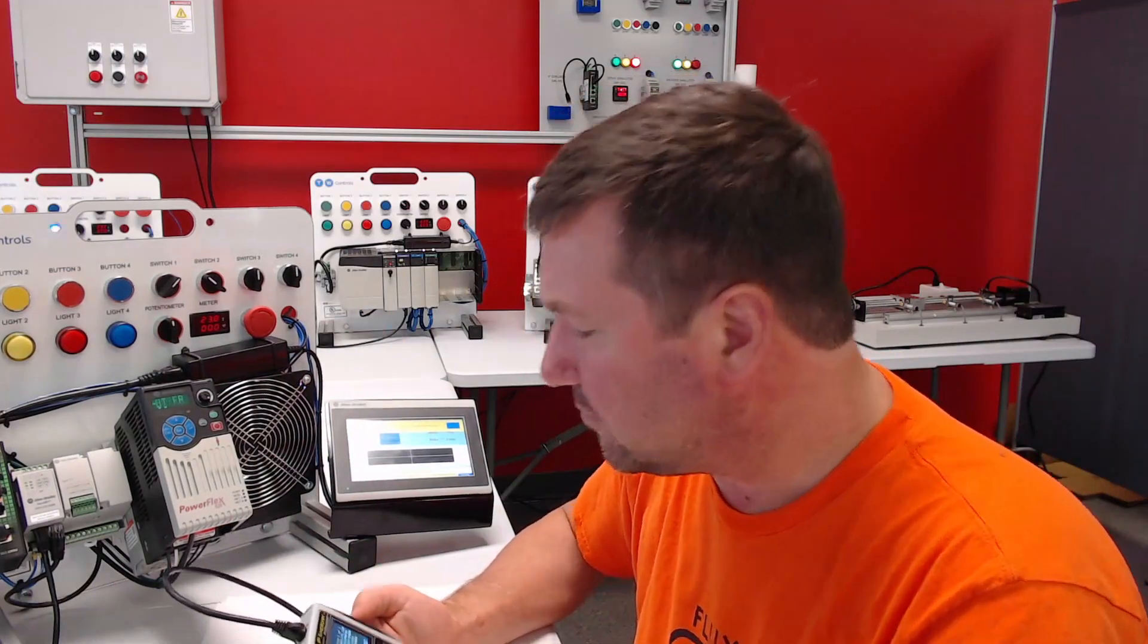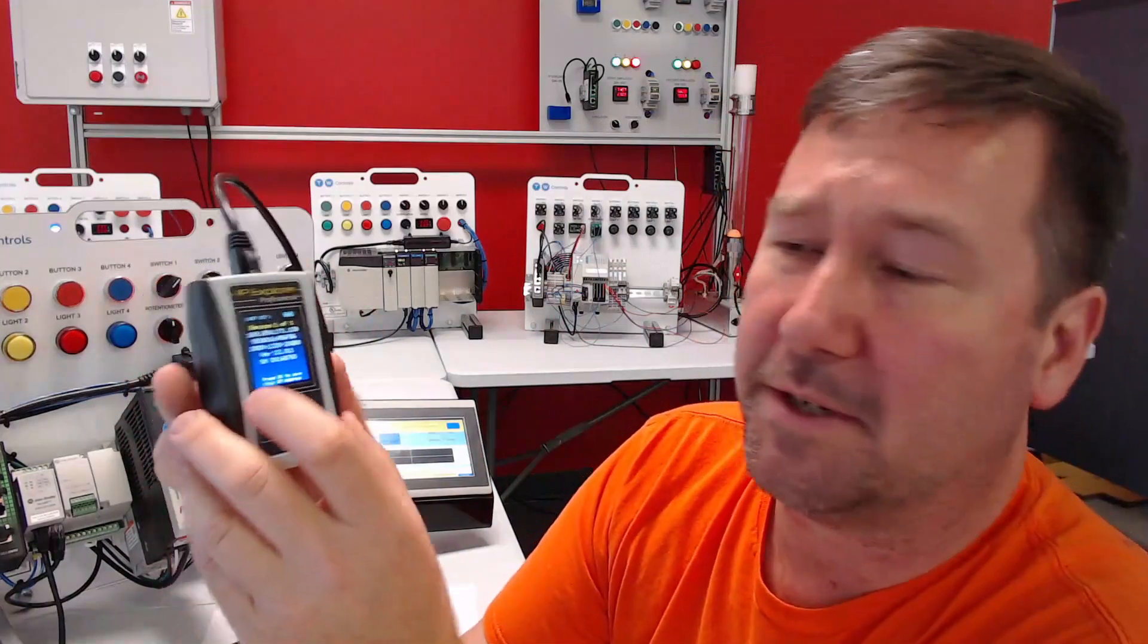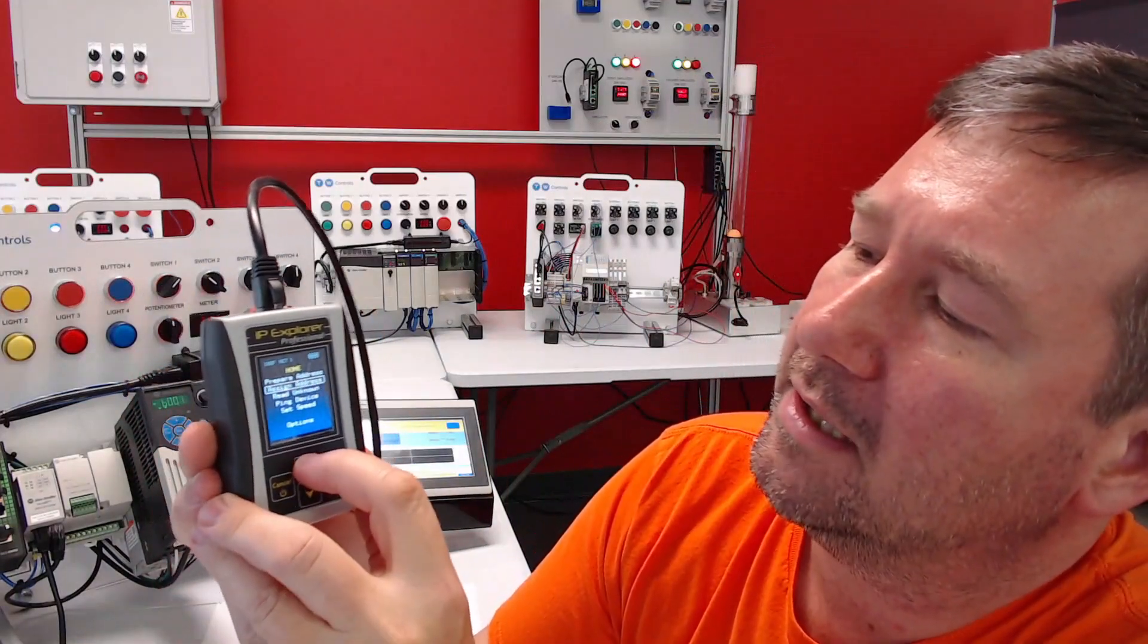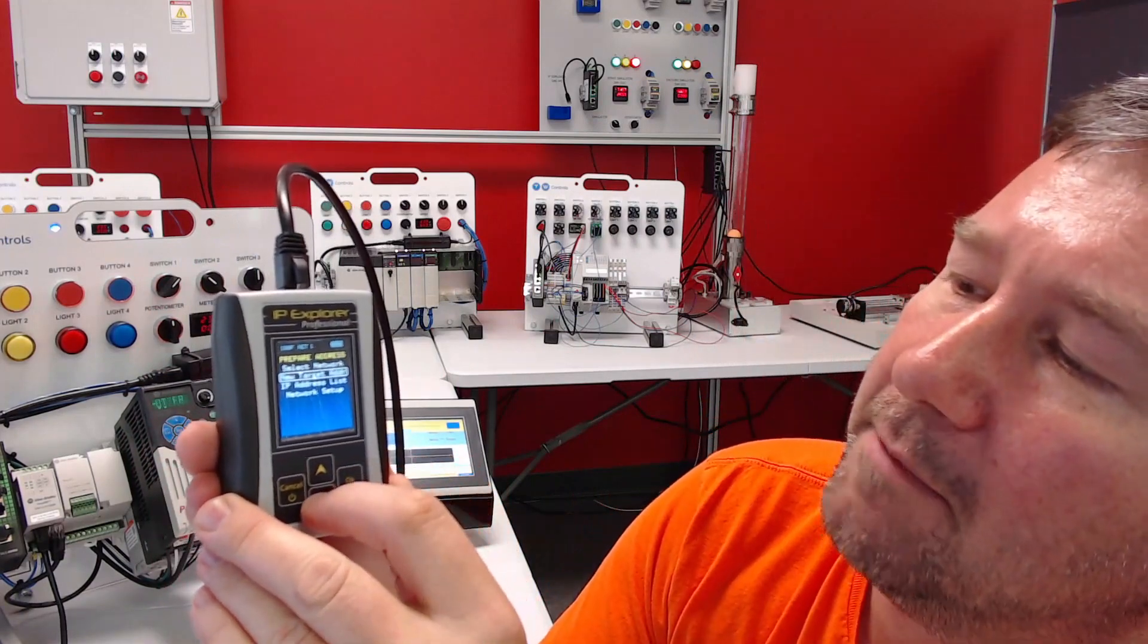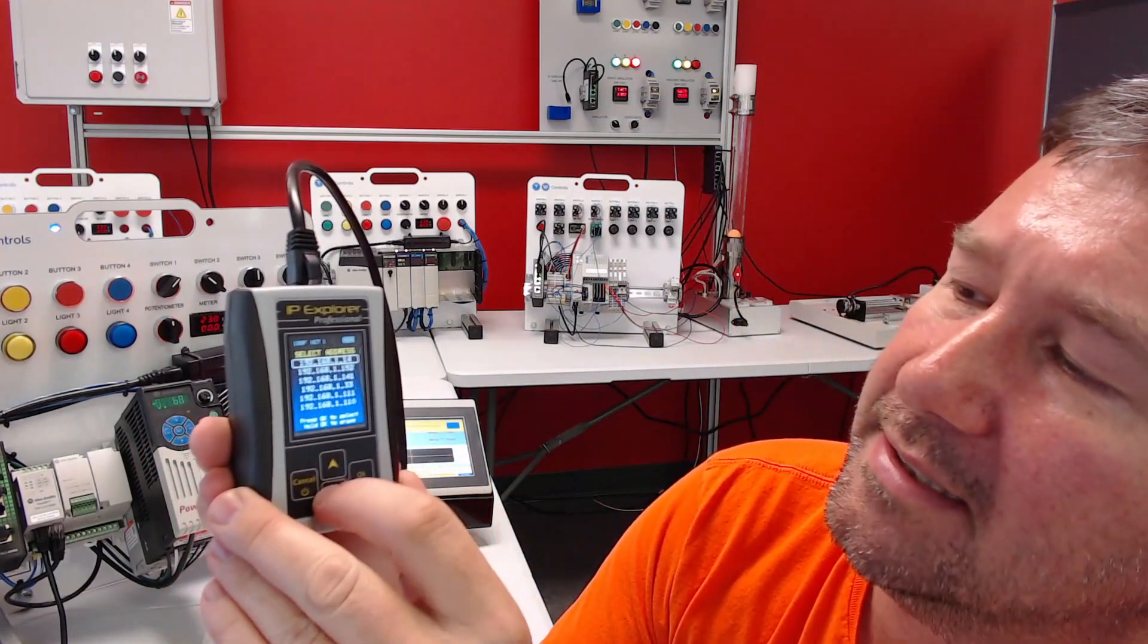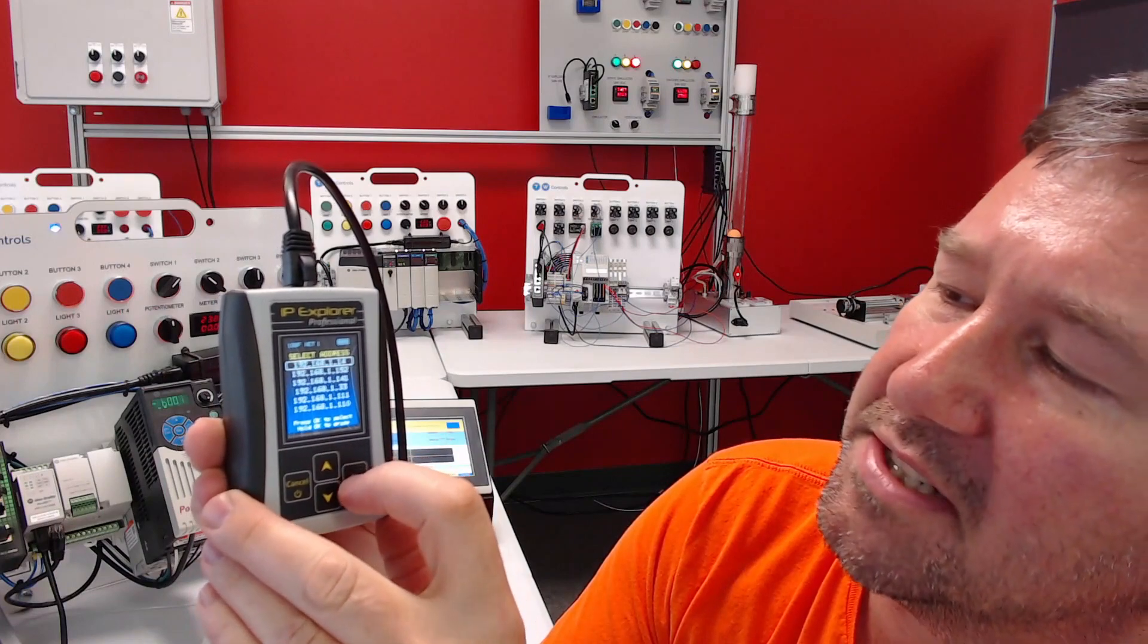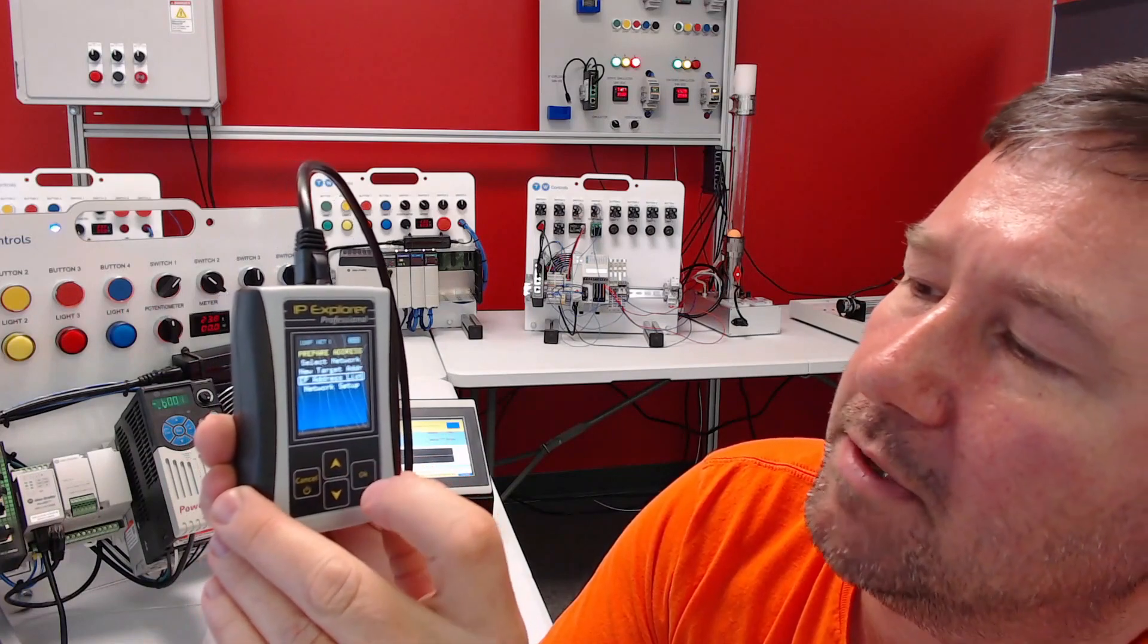Now we can fix this pretty easy. We're just going to go back out, we're going to go to Prepare Address, and we're going to go to our IP Address List, and we're going to select 192.168.1.14, which was what it originally was.